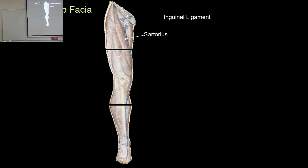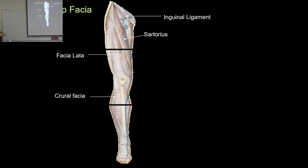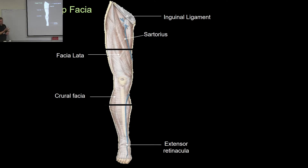The name sartorius relates to tailoring — you may have heard the term 'sartorial elegance,' meaning well-clothed or well-tailored. There's some reference to the work tailors used to do sitting on the ground, perhaps stretching this muscle out. The fascia of the thigh is called the fascia lata; it's one continuous fascia over the whole limb, but in the leg it's called the crural fascia.